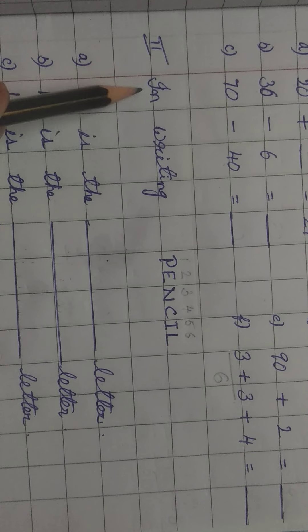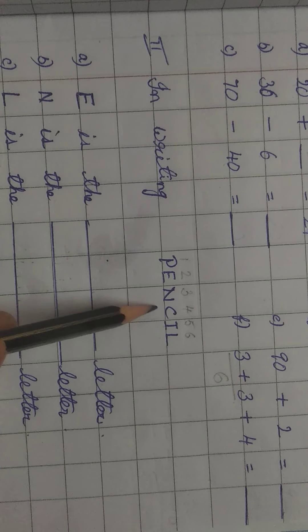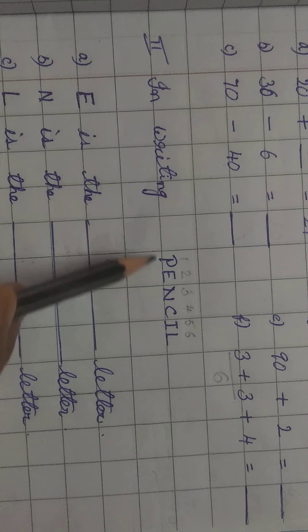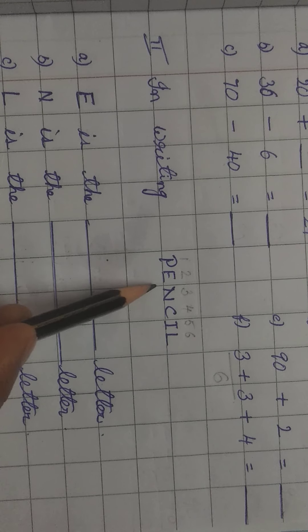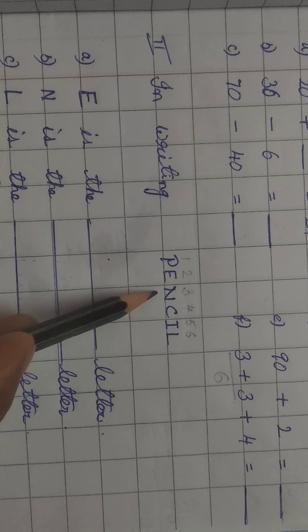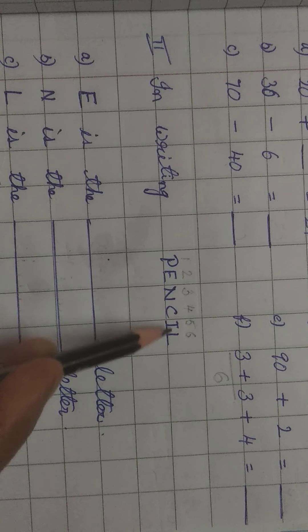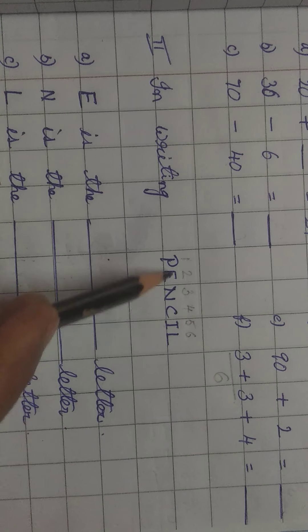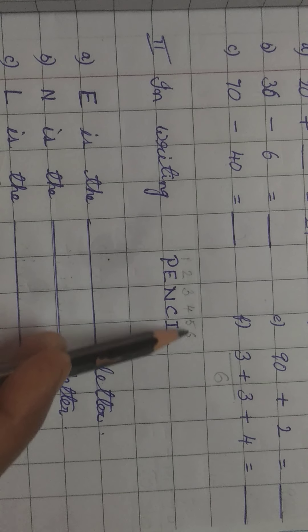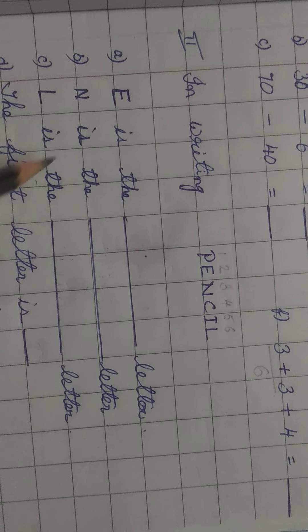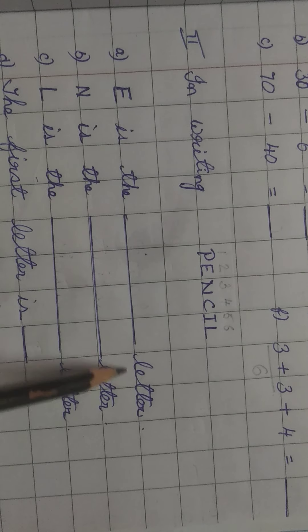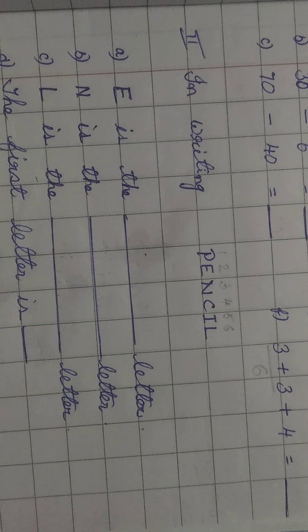Next, second exercise. Writing pencil. Children, this exercise is taken from the ordinal numbers chapter. P-E-N-C-I-L, pencil. In the pencil, how many letters are there? 1, 2, 3, 4, 5, 6. Just look at this. I have written all the numbers. So now, E is the dash letter. Children, ordinal numbers means what? First, second, third, fourth, fifth. Yeh sab ordinal numbers hoti hai na?